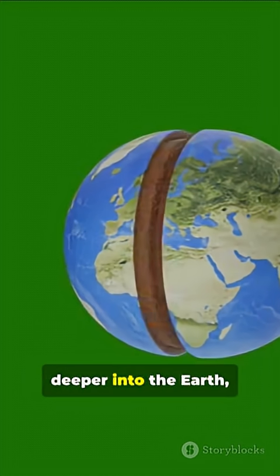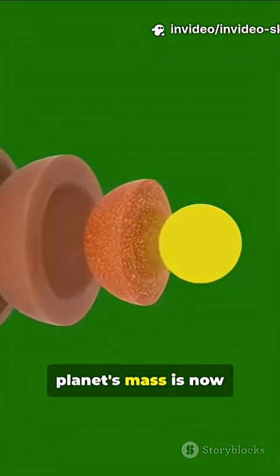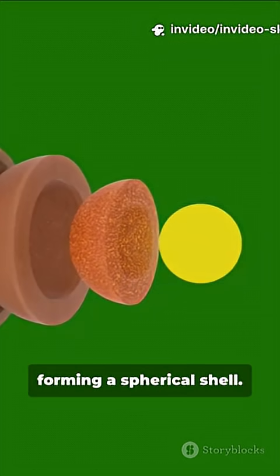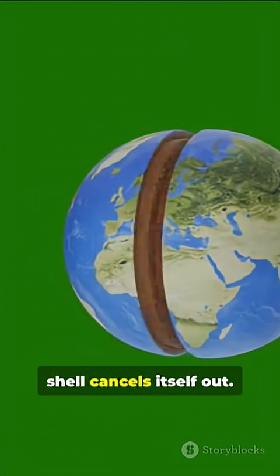As you travel deeper into the Earth, a portion of the planet's mass is now above you, forming a spherical shell. According to the Shell Theorem, the gravitational pull from this outer shell cancels itself out.